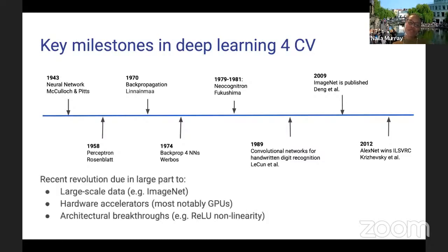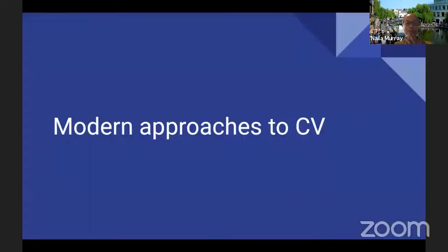The most recent revolution in deep learning can be attributed to three things: large-scale data (like ImageNet), hardware accelerators (GPUs enabling massive matrix multiplication), and architectural breakthroughs — for example, the effective use of ReLU as a non-linearity was key.